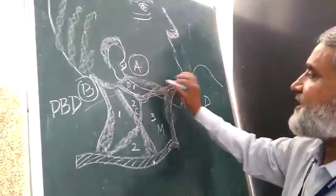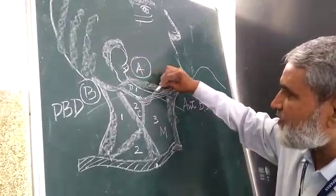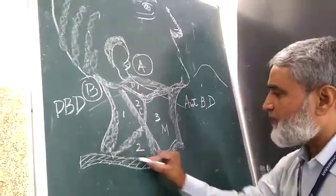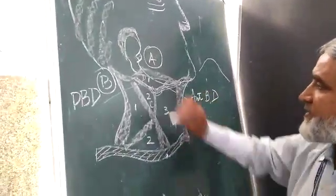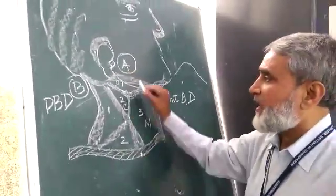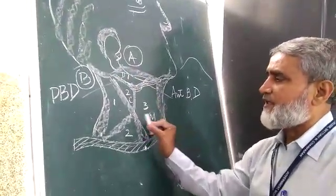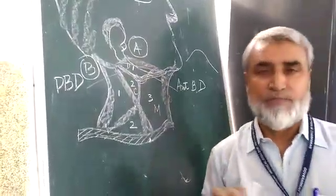Now come over anterior triangle of neck. This is lower border of mandible and this one is upper border of clavicle. This limits the upper and lower limit. And this area is divided into two parts, anteriorly and posteriorly by a muscle, sternocleidomastoid muscle.